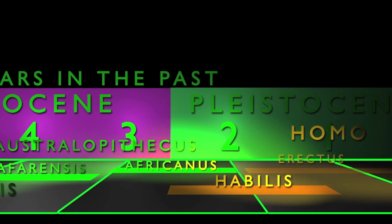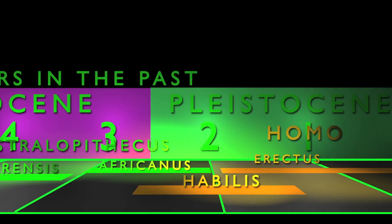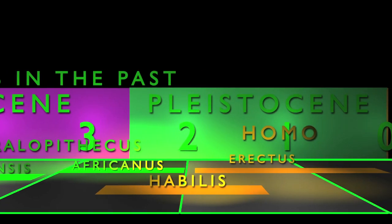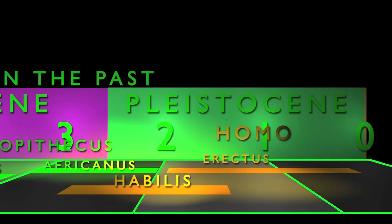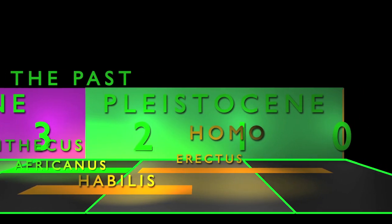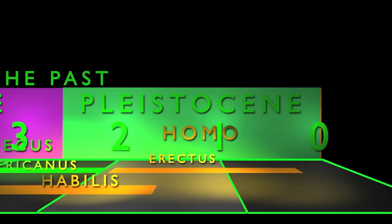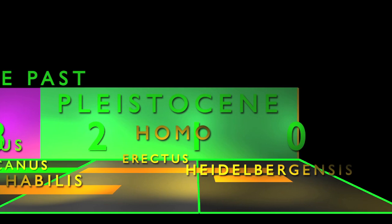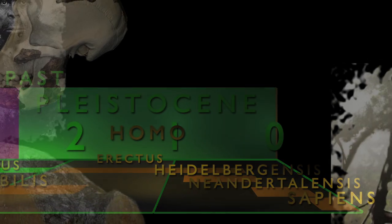Around 1.8 million years in the past, we find Homo erectus, also known as Homo ergaster. Homo erectus represents a direct ancestor on the family tree and is the first member of the genus Homo to migrate out of Africa into Europe and Asia. Homo erectus gave rise to Homo heidelbergensis, who in turn gave rise to Homo neanderthalensis and Homo sapiens.